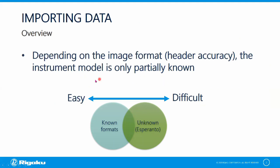That will make your import either easy or difficult on a spectrum. Formats that we've already processed with CrysAlis Pro — the known formats — will be on the easy side. The unknown formats, which you'll have to use the Esperanto importer for, would be on the more difficult side. But on this Venn diagram, you'll see there is an overlap, so you can have a known format that ventures into the difficult area.